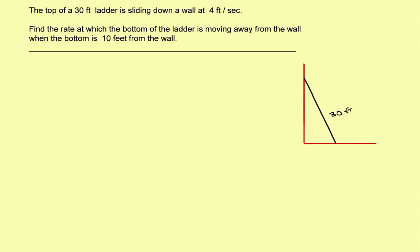The first thing to do is draw yourself a picture and label all the things that you know and the things that you don't know. Here's the wall, here's the 30-foot ladder. I'm going to put y on this side and x on this side. If y represents the height at the top of the ladder, the top of the ladder is moving down at 4 feet per second. So I know that dy/dt is 4 feet per second.